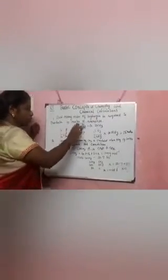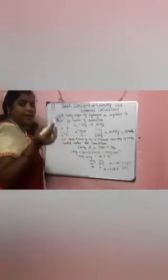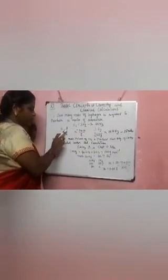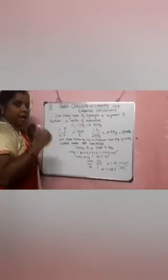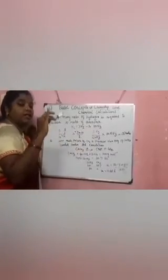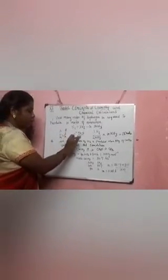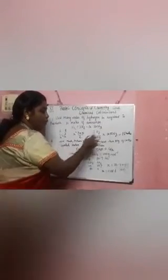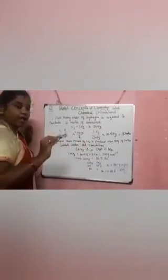Let us solve the problem. For 2 moles of ammonia, 3 moles of nitrogen are required. For 10 moles of ammonia, how many moles of nitrogen will be required? Setting up the proportion: (3 moles of nitrogen / 2 moles of ammonia) × 10 moles of ammonia = 30 / 2 = 15 moles. So for 10 moles of ammonia, we need 15 moles of nitrogen.